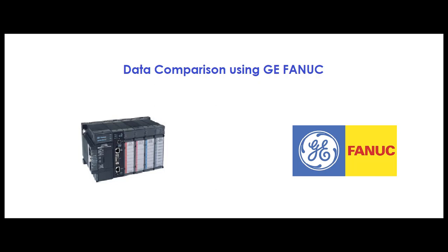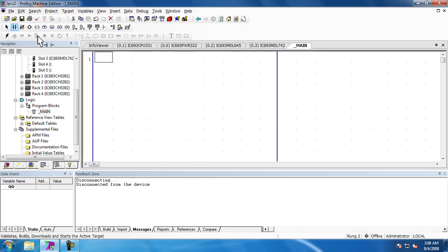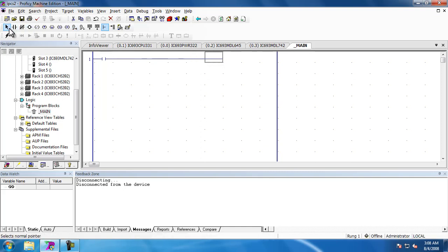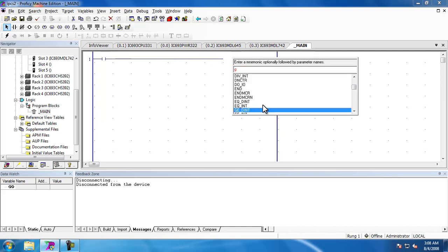Hi everyone, welcome to another tutorial video from IPCS Automation. In this tutorial we are going to look at the data compare instructions using GFeno. Data compare instructions are input instructions that allow more programming possibilities. These instructions compare the data that is stored in two or more sources and take a decision based on the programming instructions.